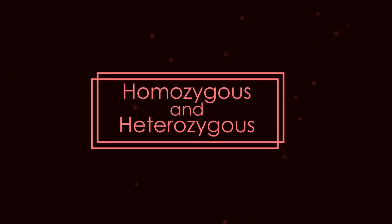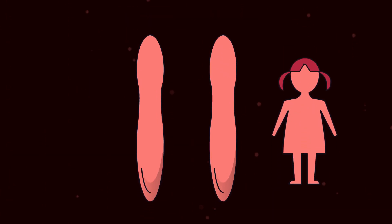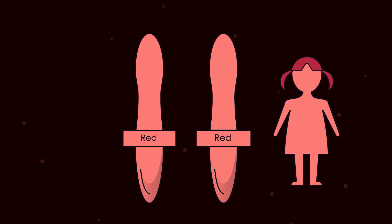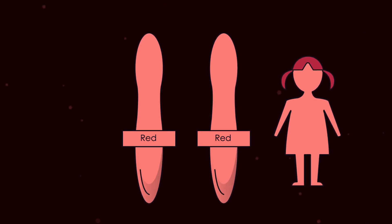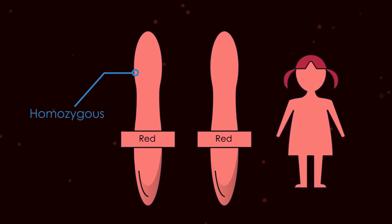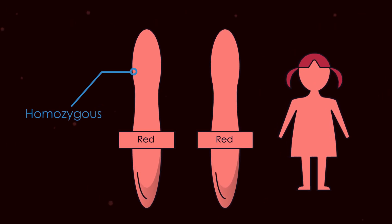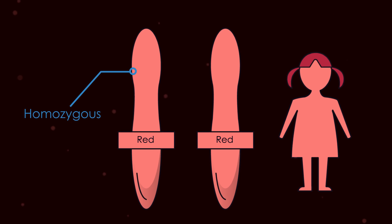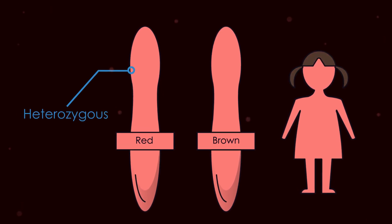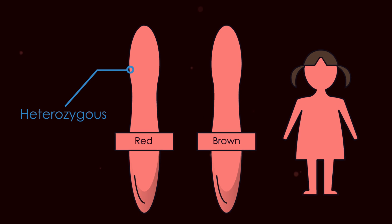Alternative forms of a given gene are called alleles. When an individual has two of the same allele, so both coding for red hair, they are homozygous — both genes are identical. Whereas if one allele codes for red hair and the other for brown hair, they are heterozygous — two different forms of the same gene are present.